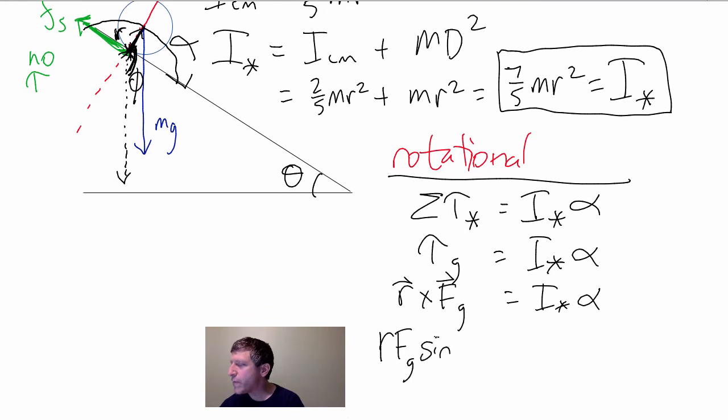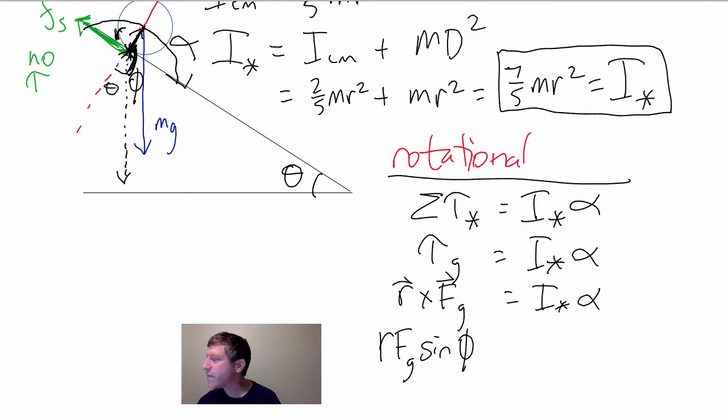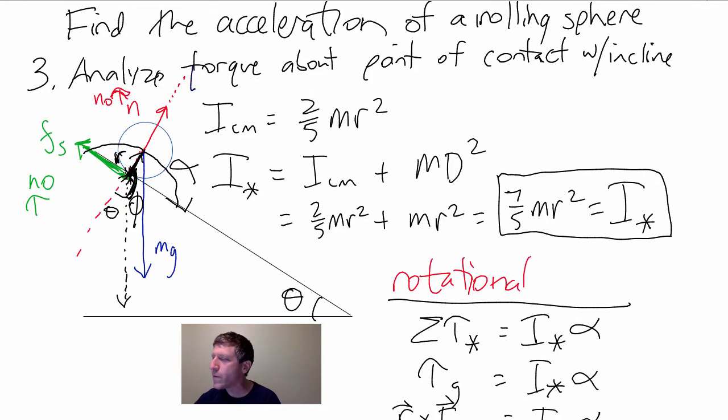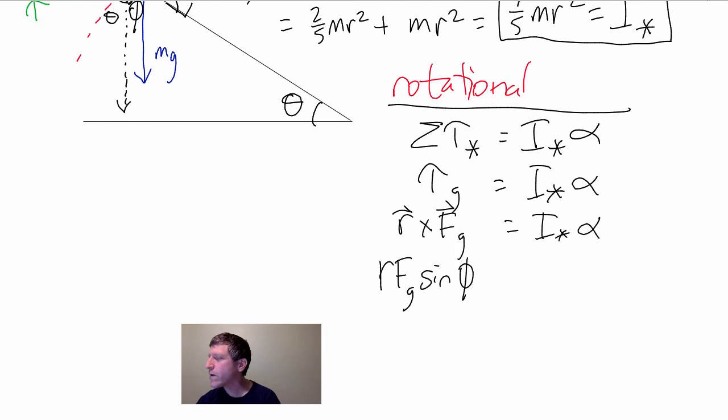Now, since phi and theta are supplements, R F G sine of phi. Notice that phi, this turns out that's theta right there. So, this angle phi, the sine of phi and the sine of theta are going to be the same thing. It doesn't matter for sines if you put them tip to tail or tail to tail. The sine of the angle, very forgiving, it will be the same.